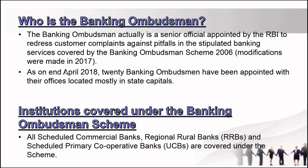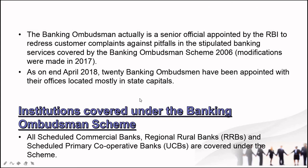As of end April 2018, 20 Banking Ombudsmen have been appointed, with their offices located mostly in state capitals. 2018 के अंत तक 20 Ombudsman officers को हर एक state में appointed किया गया, ताकि अगर कोई भी problem आती है तो RBI की तरफ से वो वहाँ पर complaint कर सकें।